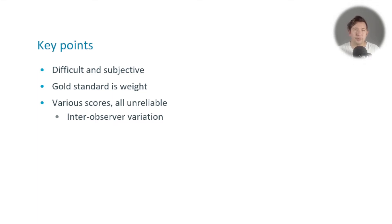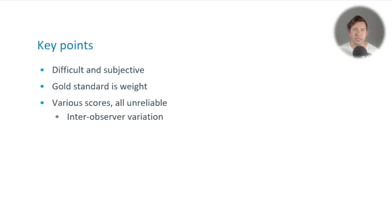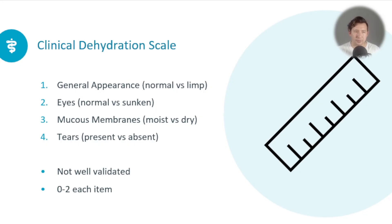There are a few different scores that people have tried to come up with. I'll touch on one of them, the clinical dehydration scale. All of these are pretty unreliable — they suffer from this big problem of intra-observer variation where different people grade the same child quite differently on the scale. So they're not that useful and not super well validated, but I'll touch on one because the measures are often things that people talk about when assessing a child.